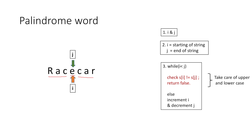We loop until i is less than j, checking our palindrome condition for every character — whether they are equal or not. If they are not equal we return false; otherwise we keep incrementing i and decrementing j until i is no longer less than j. If all characters match, at the end of the loop we return true.